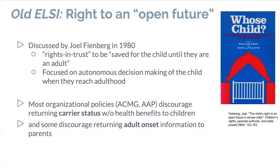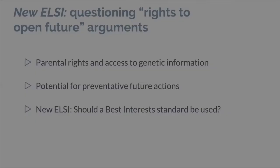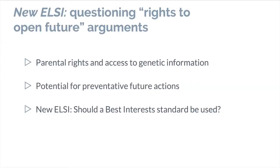The right to an open future was coined by Joel Feinberg in 1980 — not specifically about medicine, but about rights of children. The idea is that we need to hold certain rights in trust, saving them for when a child becomes an adult so they can make autonomous decisions about whether they want to receive genetic information. Most organizational policies have discouraged returning carrier status or adult onset information to families in order to protect that right.